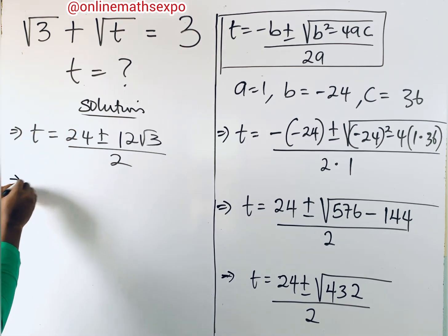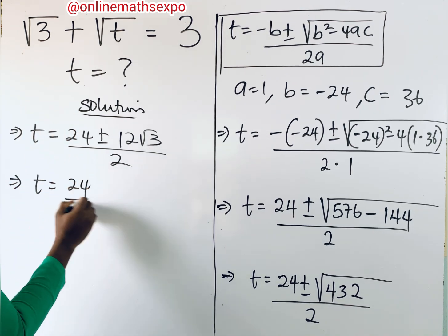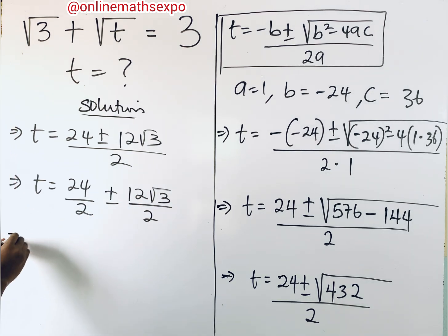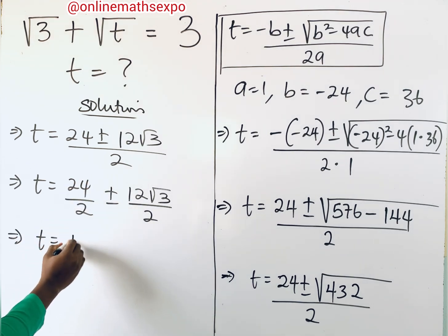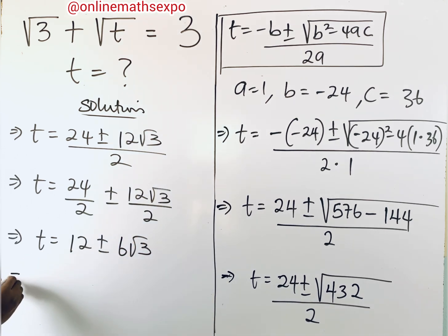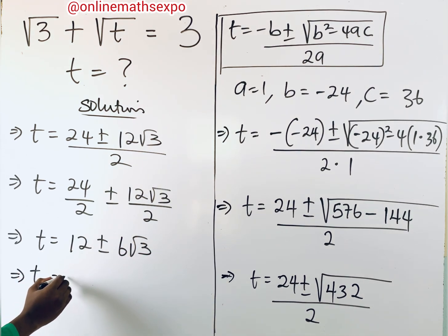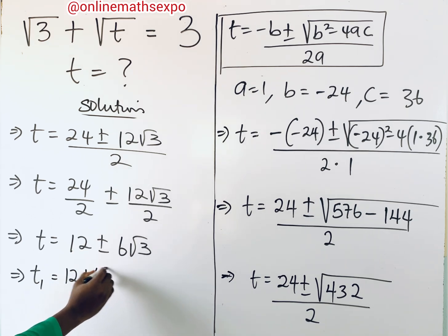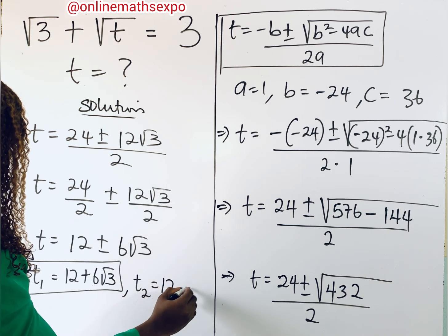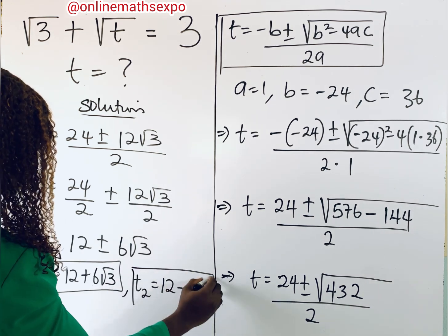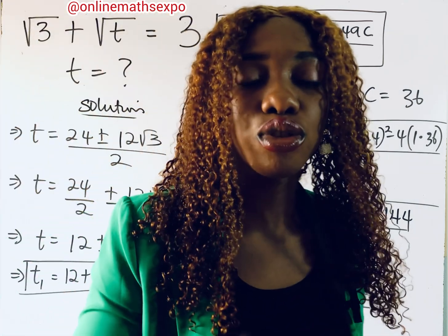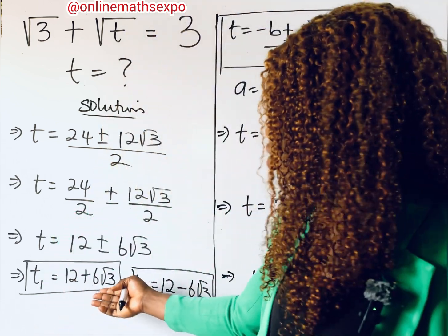Simplifying by dividing each term by 2: t = 24/2 ± 12√3/2, which gives t = 12 ± 6√3. So our two potential values are t = 12 + 6√3 and t = 12 − 6√3. Since this is a radical equation, we need to check both values to identify the valid solution and discard any extraneous one.